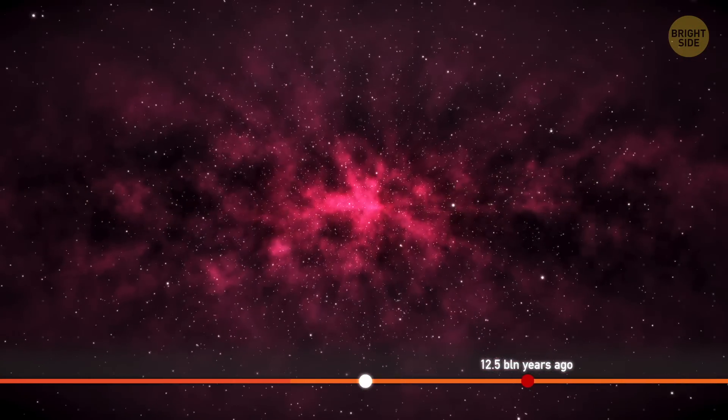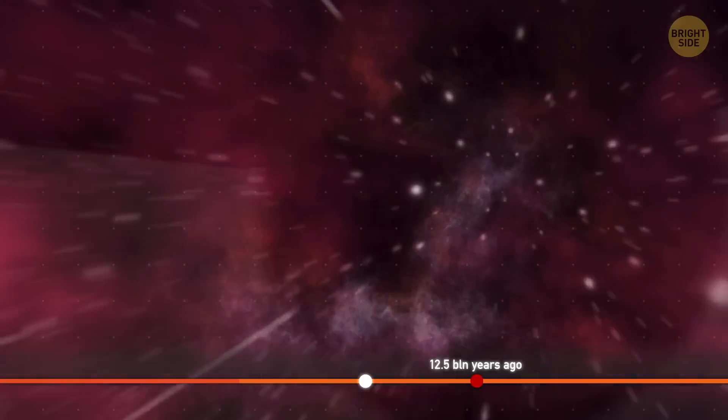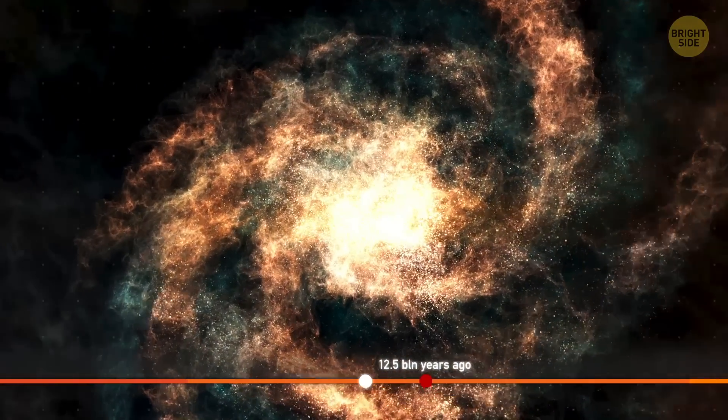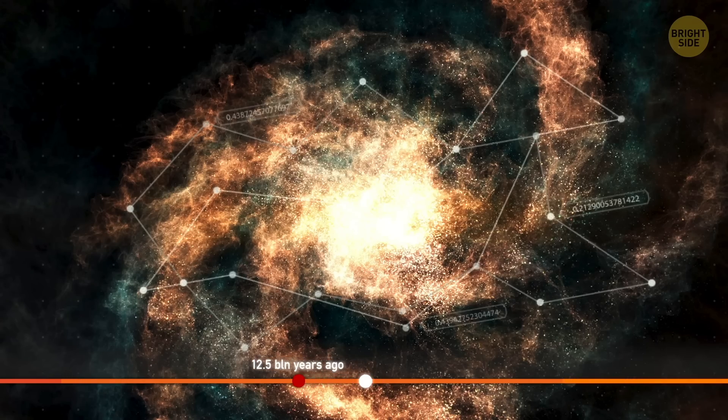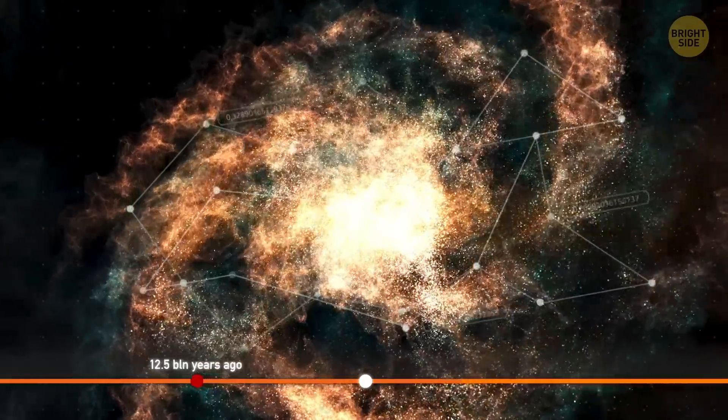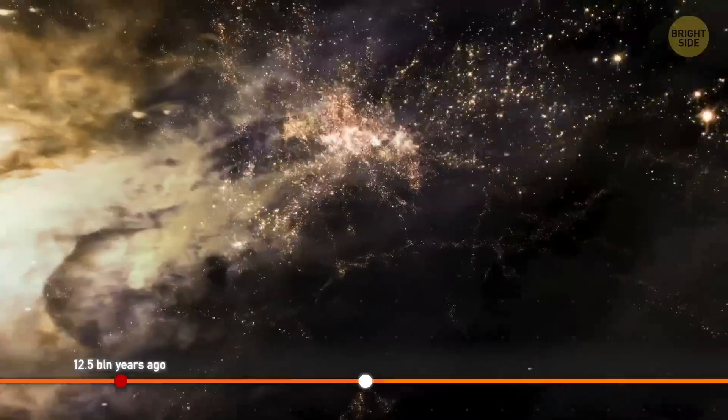Soon after, though, the Milky Way finally began taking shape. Our home galaxy is a barred spiral, which means it has a bar at the center and several arms. And on top of one of those, our solar system would eventually be born. Right now, it's no more than a roughly circular blob, though.